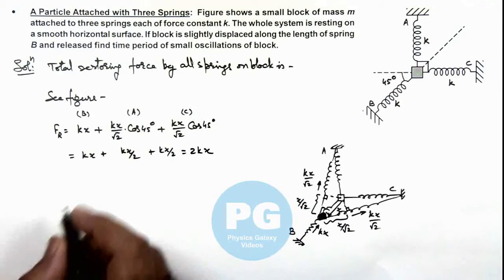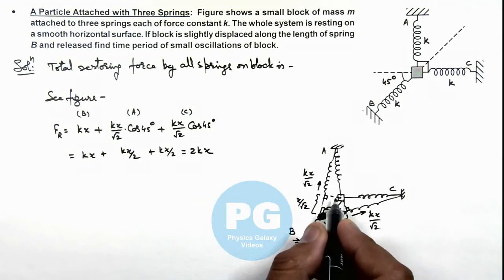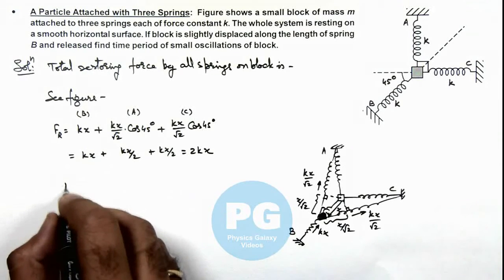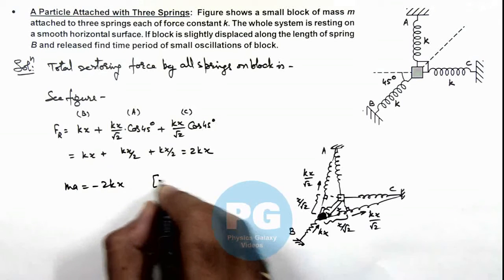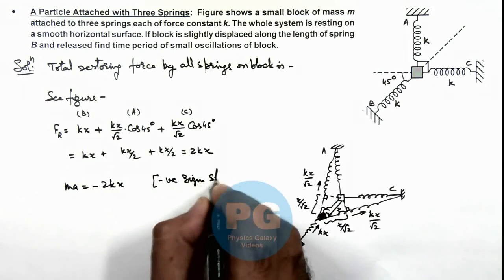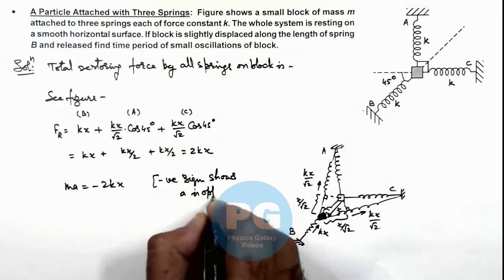Due to this, the block will accelerate toward the initial position with acceleration a. This restoring force can be written as ma = -2kx. The negative sign shows that a is opposite to x. This negative sign we introduce to develop the differential equation of SHM.